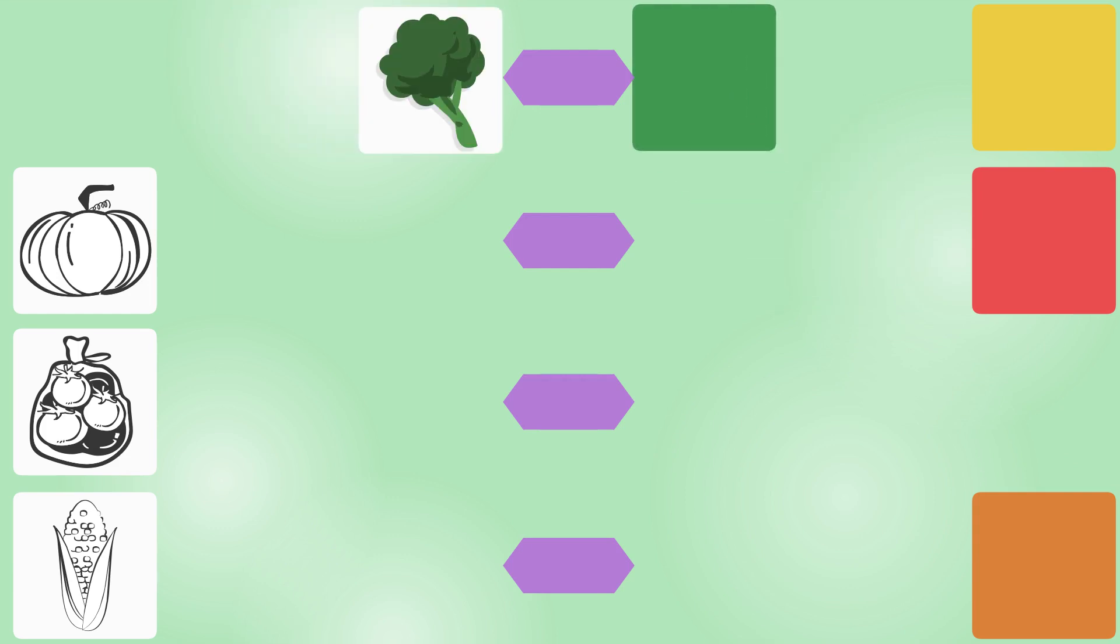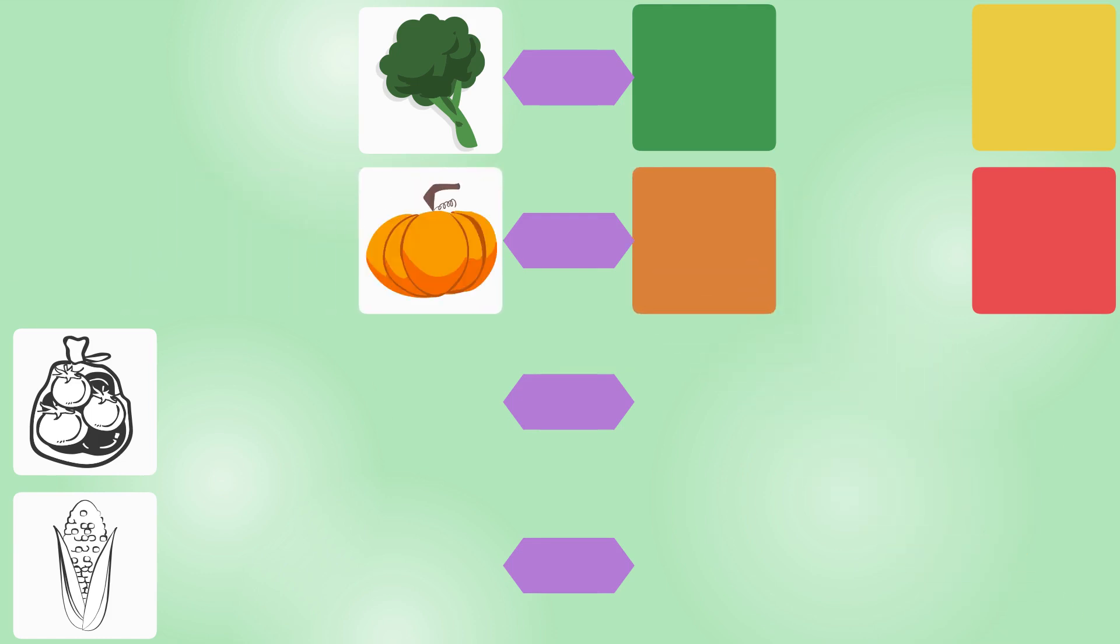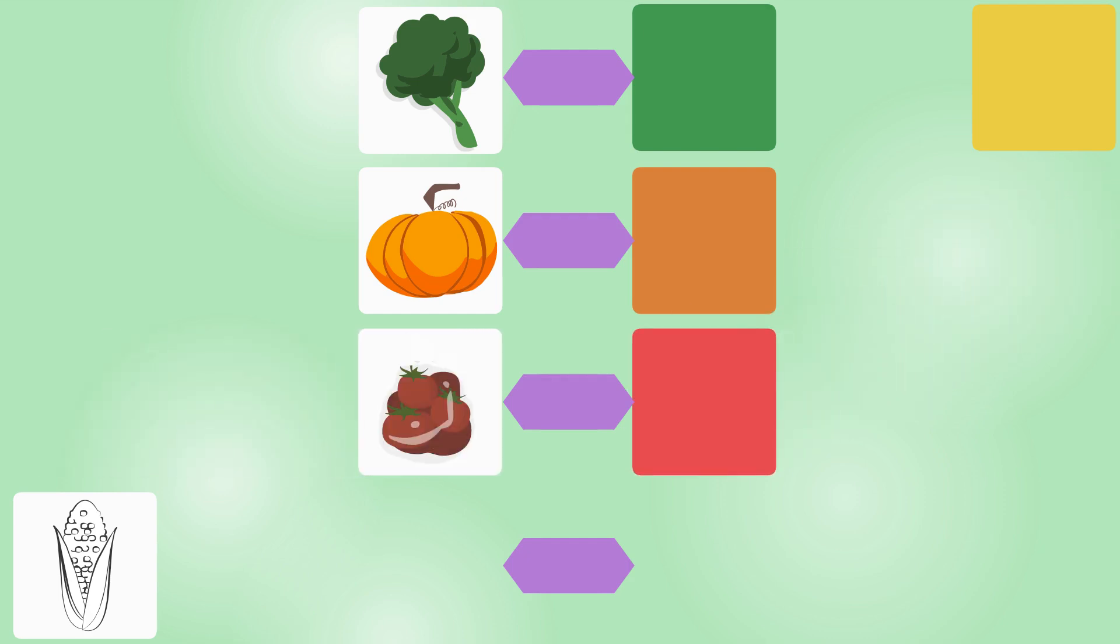Green Broccoli. Orange Pumpkin. Red Tomatoes. Yellow Corn.